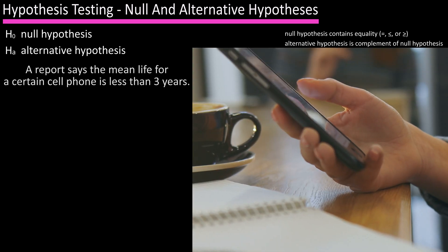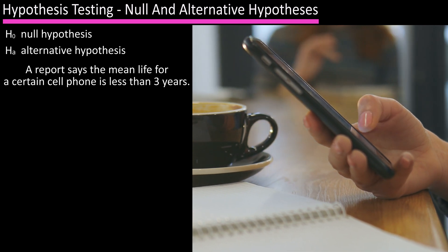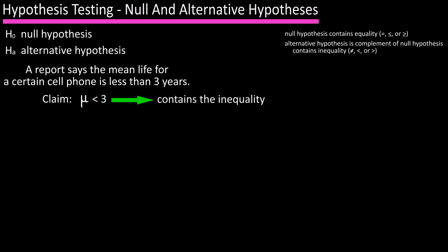A magazine recently reported that the mean life of a certain cell phone is less than three years. So the claim is that mu is less than three and that is our null hypothesis with the equality in this statement.